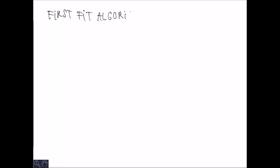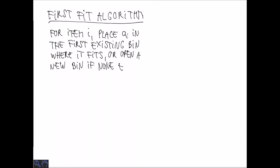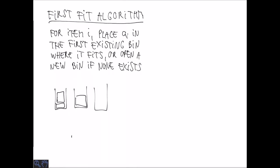The greedy algorithm is not the best one can do. One way of doing better is the so-called first-fit algorithm. For an item i, we place it in the first existing bin that has capacity for it. If no such bin exists, we open a new bin and place the item in it. In this example, the first two items go to the first bin; the third doesn't fit, so it goes to the second; the fourth fits in the first bin; the fifth doesn't fit in the first or second, so we open a third bin, and so on.